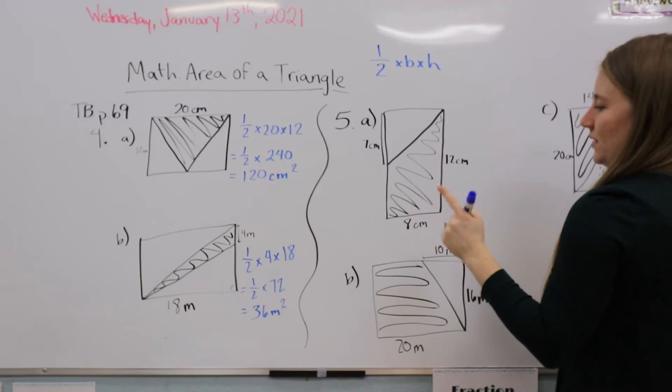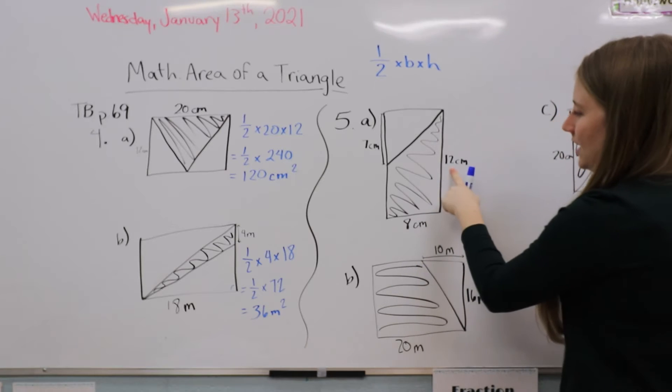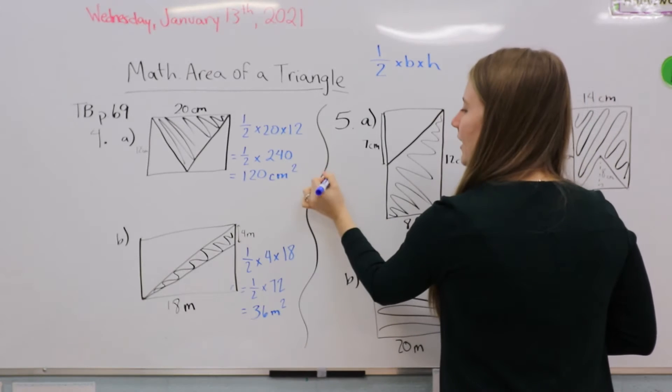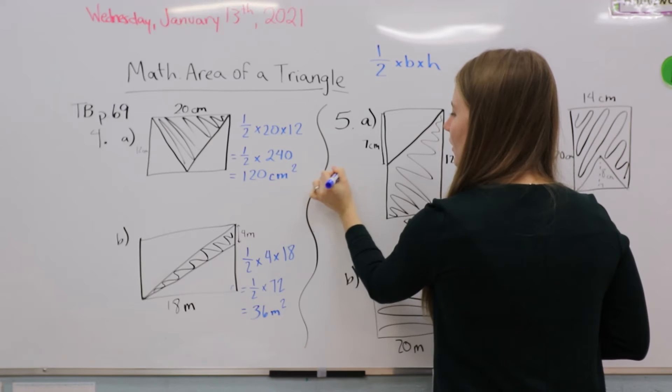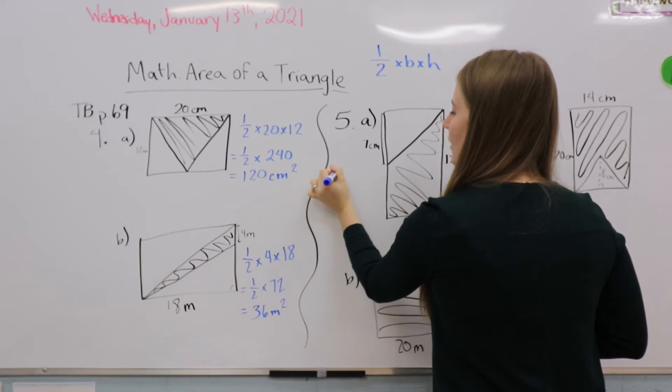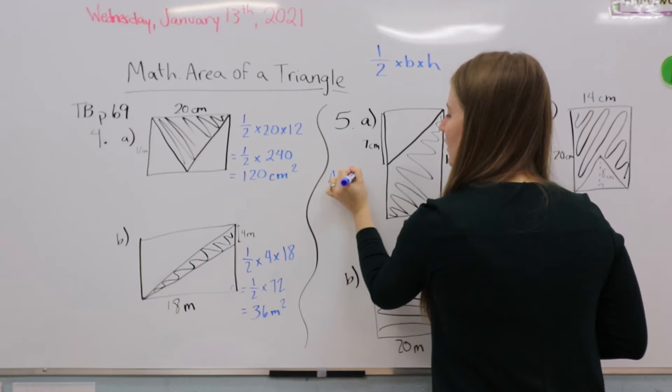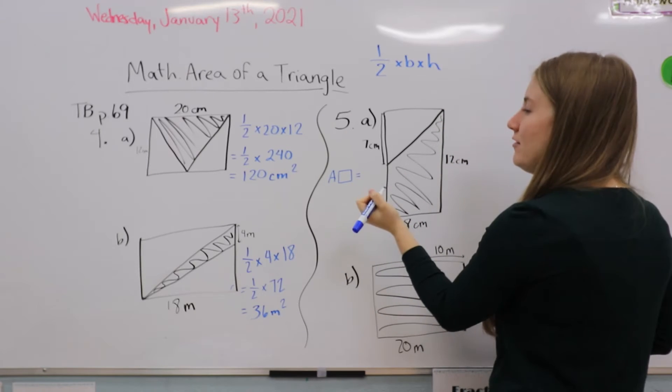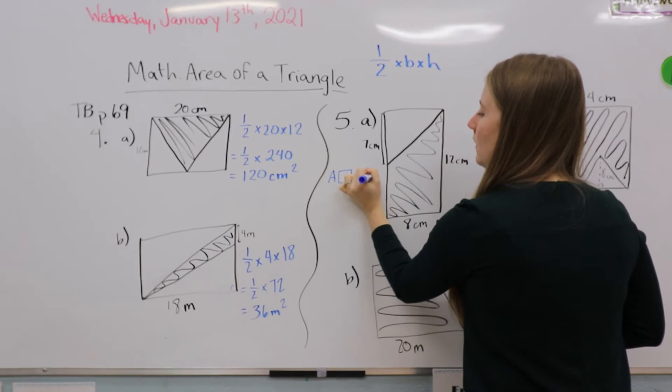So let's start with the area of the rectangle. It's 8 times 12 because it's just length times width. So the area of the rectangle is 8 times 12, which is 96 centimeters squared.